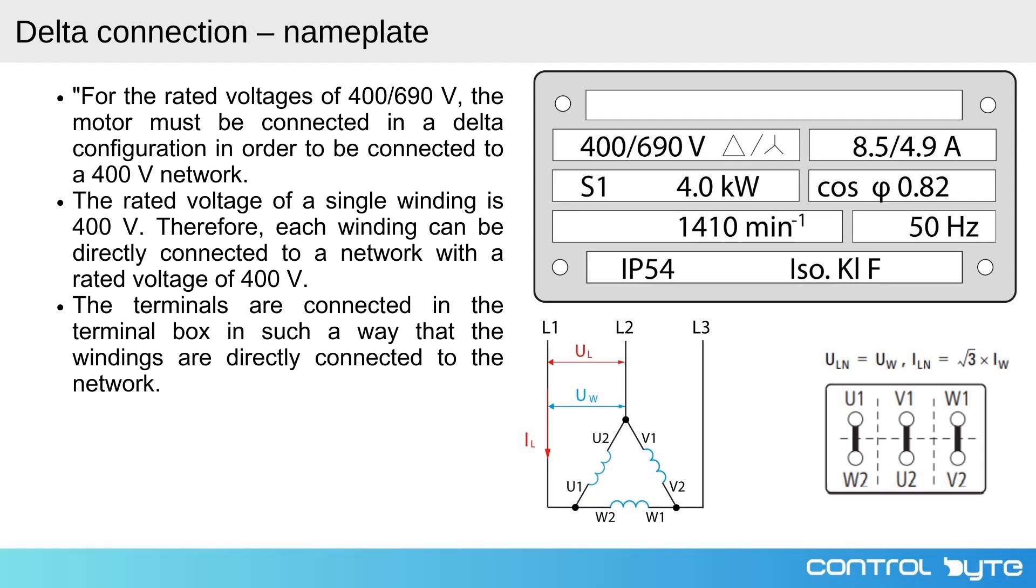In the previous slide we discussed the star connection. Now let's explore the delta connection and how it compares to the star configuration. Looking at this motor nameplate, we see the voltage ratings listed as 400/690 volts. This indicates that the motor must be connected in a delta configuration when operating on a 400 volt supply.